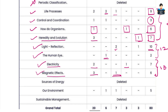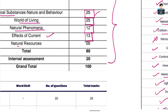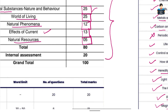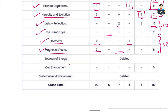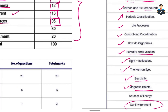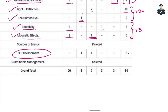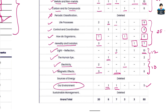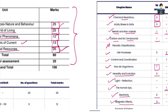Prepare first the light chapter, then electricity, magnetic effects of current, and last the human eye chapter. In unit 5, natural resources carry 5 marks. We cover the chapter 'Our Environment', which has natural resources with 2 marks and 3 marks breakdown.